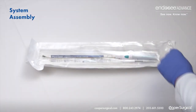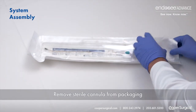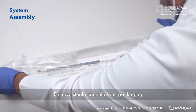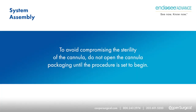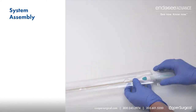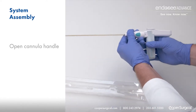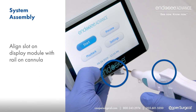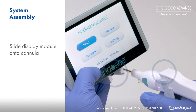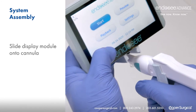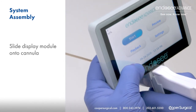To connect the cannula and display module, peel apart the sterile packaging and remove the cannula. To avoid compromising the sterility of the cannula, do not open the cannula packaging until the procedure is set to begin. Open the cannula handle to the down position. Align the slot at the bottom of the display module with the rail on top of the cannula, and slide the display module onto the cannula until you hear and feel a click.